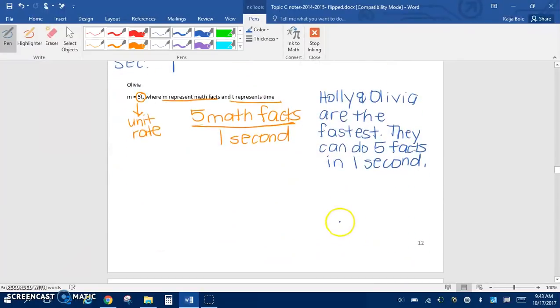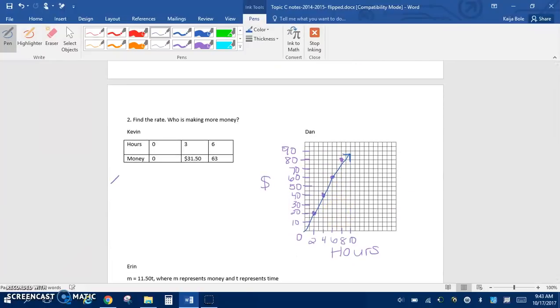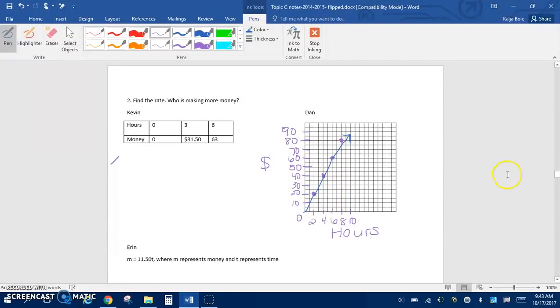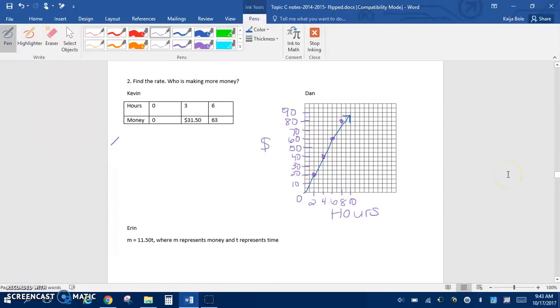Let me just have one more now on the back page. Kind of similar. So it says define the rate and it's asking who's making more money. So we have Kevin, Dan, and Aaron. So I'm going to do Kevin in purple here. So we are comparing hours to money. Remember, money always goes on top. Then we're going to put hours on the bottom. And again, if we look at the graph, hours is x and money is y. And rate is always y over x. So if we look here, it says that in 3 hours, Kevin can make $31.50.